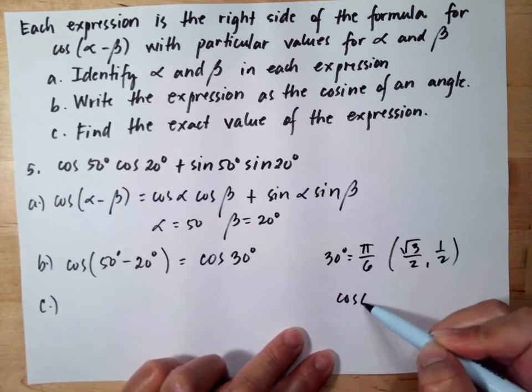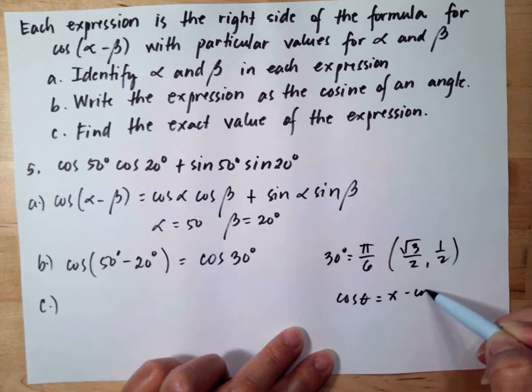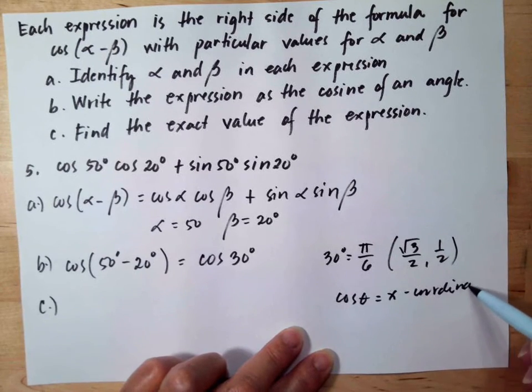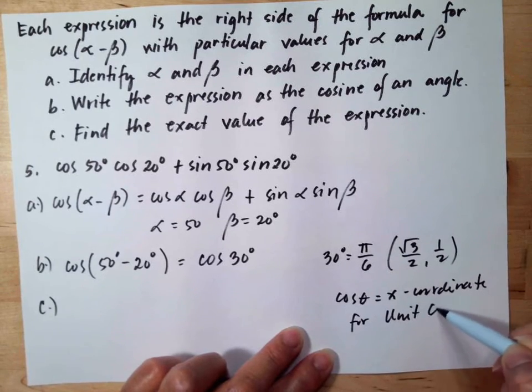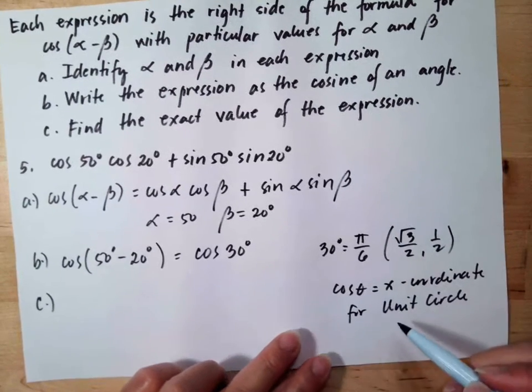Now, the cosine of the angle is the x-coordinate for unit circle, for unit circle only.